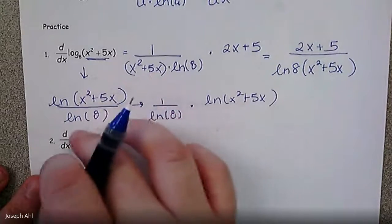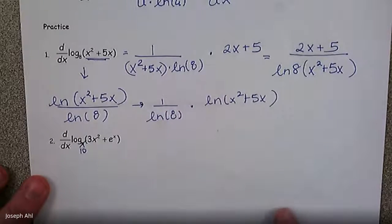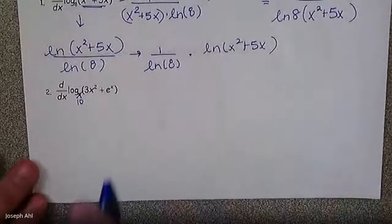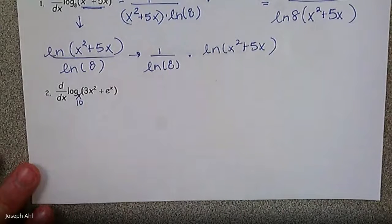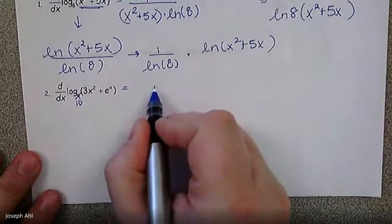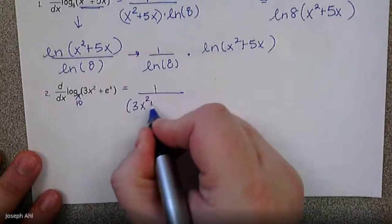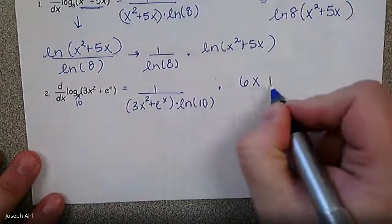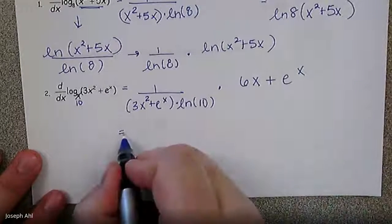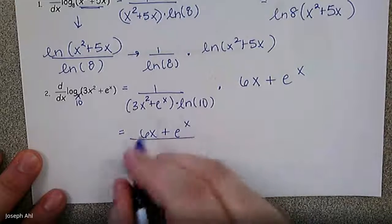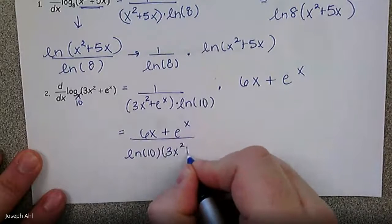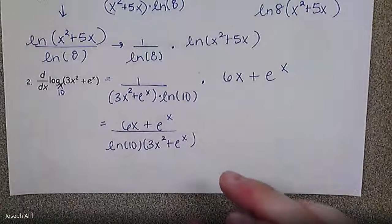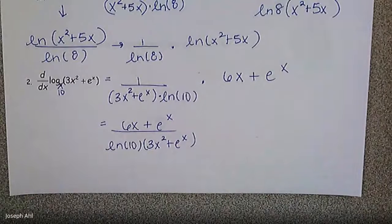For the last example, the derivative of log base 10 of 3x squared plus e to the x: that's one over 3x squared plus e to the x times ln 10, times the derivative of the inside, which is 6x plus e to the x. Cleaning up: 6x plus e to the x in the numerator, ln 10 times 3x squared plus e to the x in the denominator. If you can do those two, you can pretty much handle differentiating logs with any base.